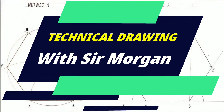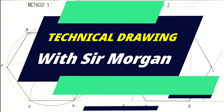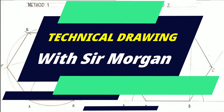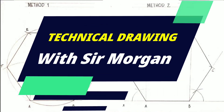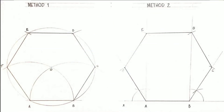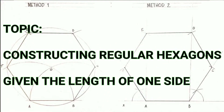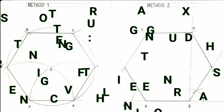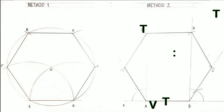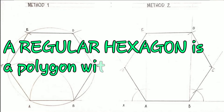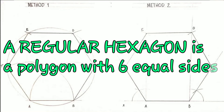Greetings everyone. Sir Morgan here from the technical department. Today I want to show you two methods that can be used to construct a regular hexagon when given the length of one side. The hexagon is a polygon that consists of six sides.